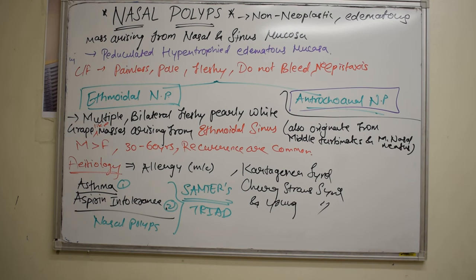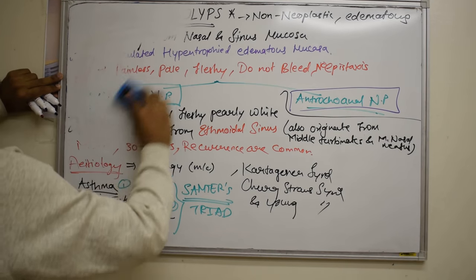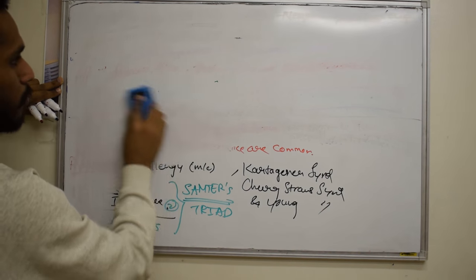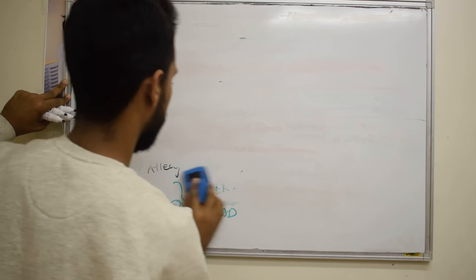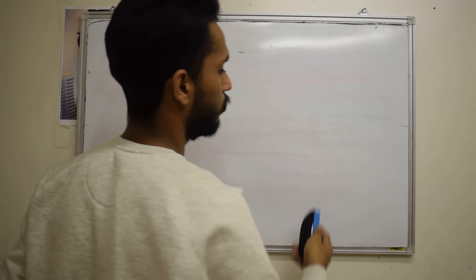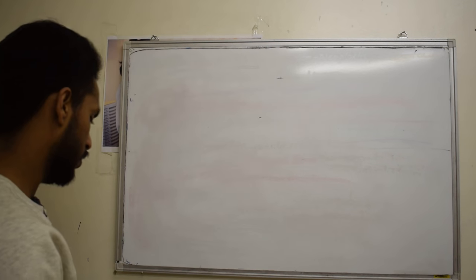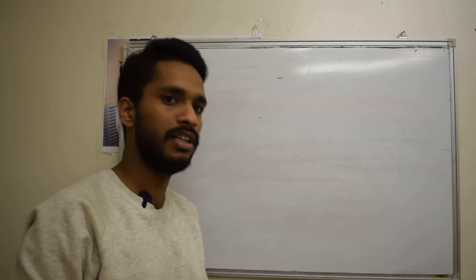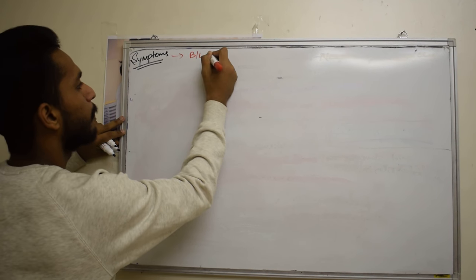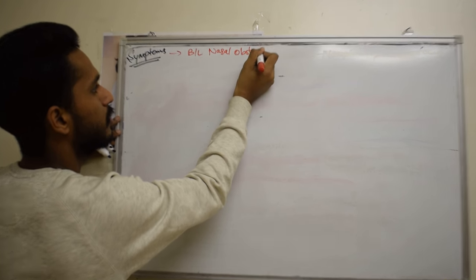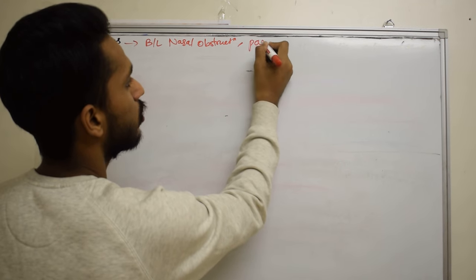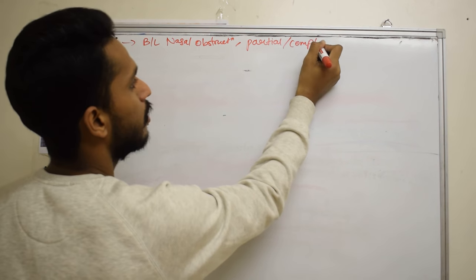Now we will talk about the symptoms of nasal polyps. Since ethmoidal polyps are present bilaterally, they will cause bilateral nasal obstruction. As there is nasal obstruction, all the air we inspire will not reach the olfactory region of the nose, so there will be a loss of smell — partial or complete anosmia.